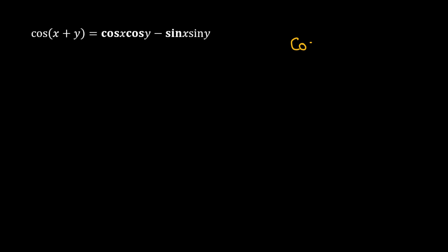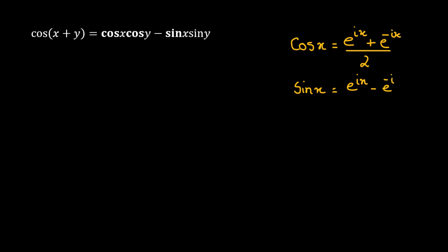We are going to use Euler's formula for the cosine function, which is given by e raised to the power of ix plus e raised to the power of negative ix, divided by 2. The Euler's formula for the sine function is e raised to the power of ix minus e raised to the power of negative ix, divided by 2i.